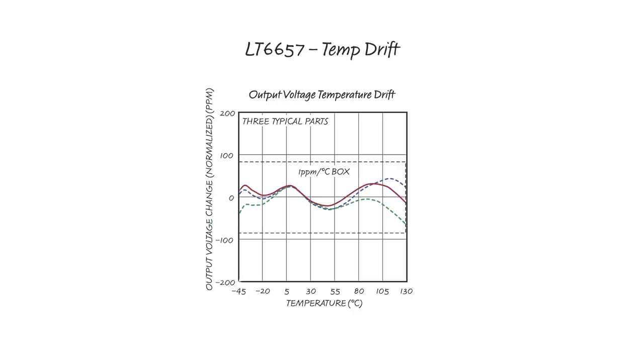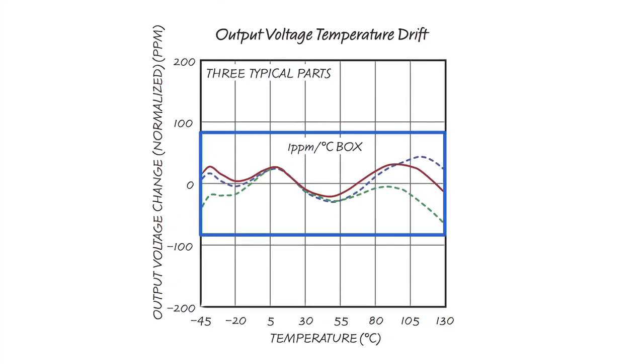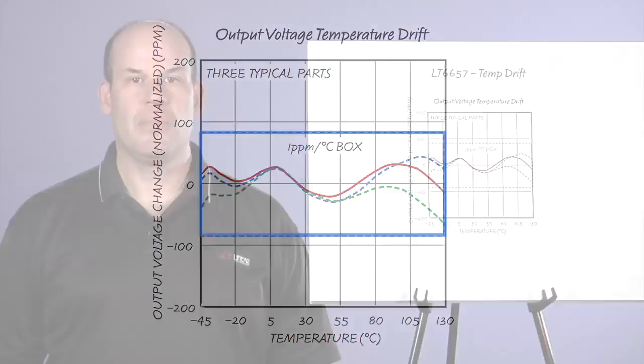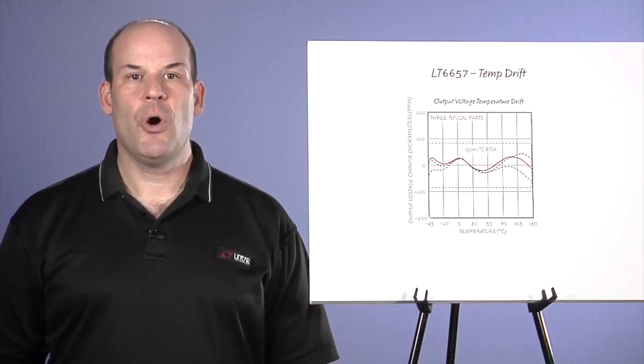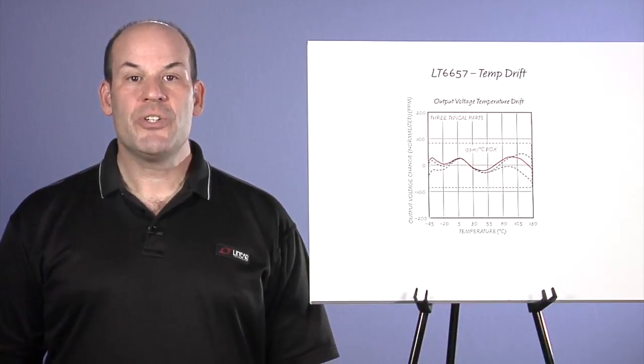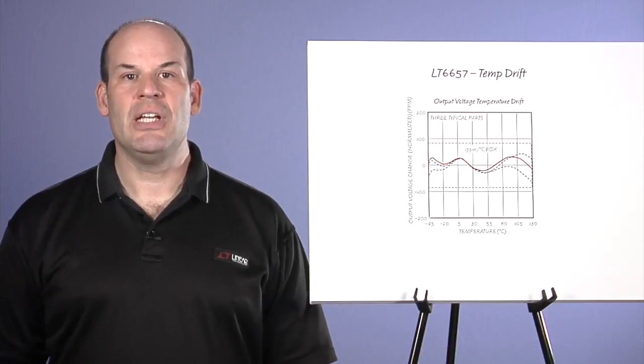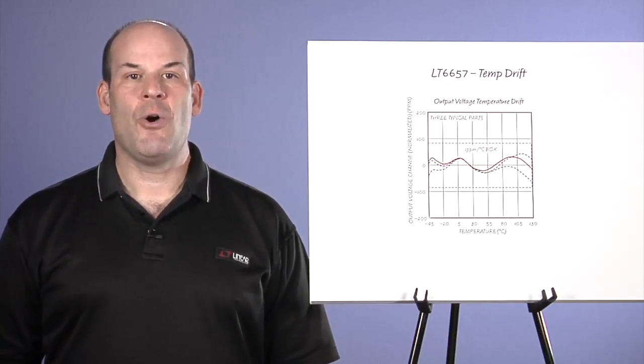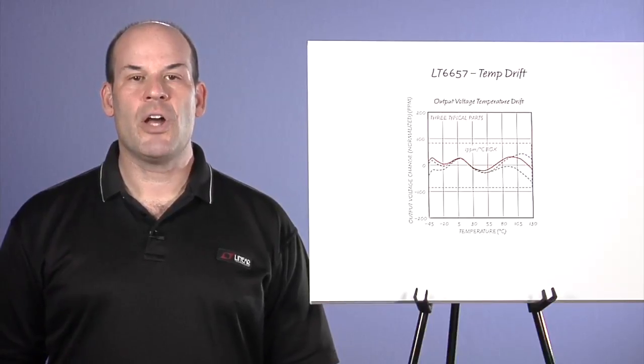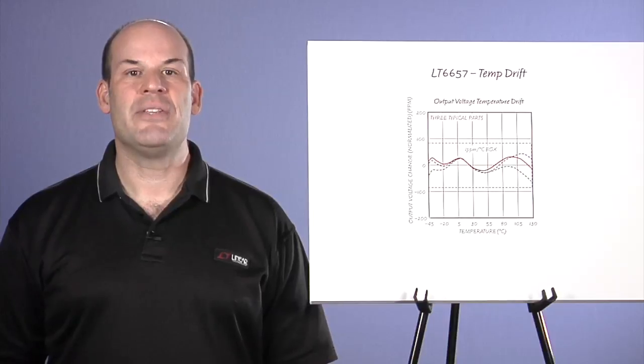The temperature characteristic is illustrated here. Note that the graphic shows a 1 ppm per degree C box. The output voltage of LT6657 is well within this box over a wide temperature range, which allows for testing the 1.5 ppm per degree C specification in automated production. With low drift specified over minus 40 degrees to 125 degrees, LT6657 provides a maximum guaranteed error of less than 250 ppm over the entire temperature range.